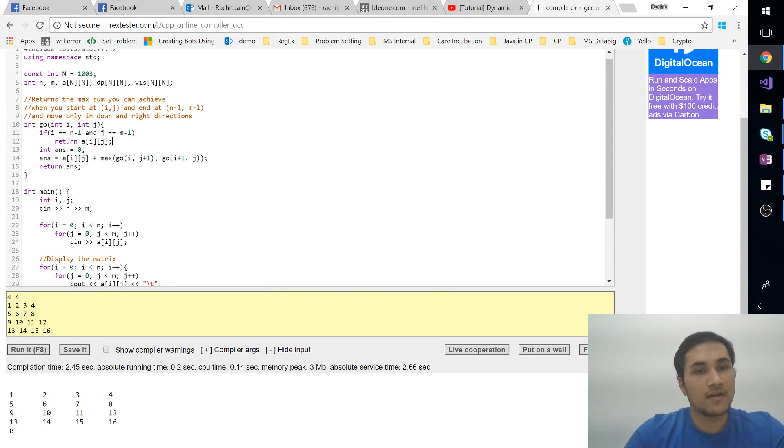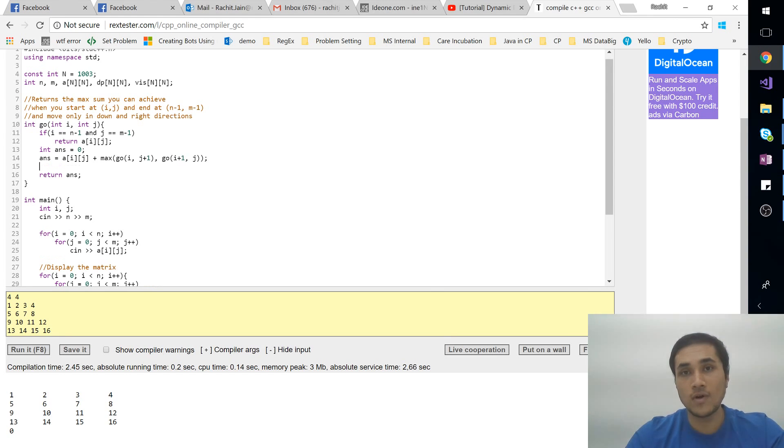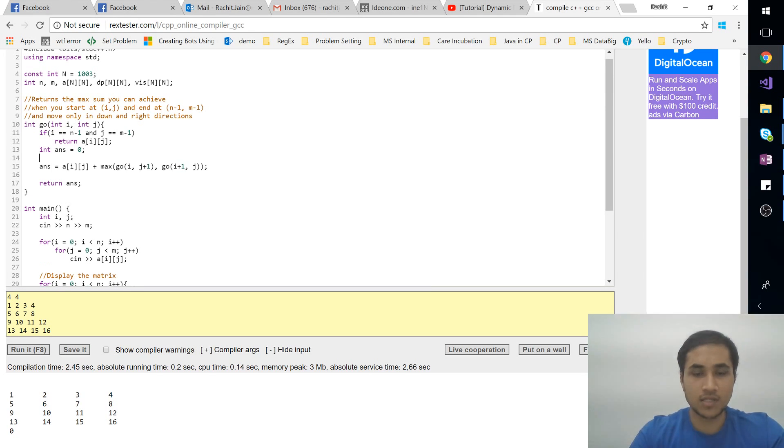Otherwise this is fine, but still, what if you're at the last column? Then you can't... you have only one choice to go down. You can't go to the right. So we'll just see that case also. So this case is only when i is less than n-1 and j is less than n-1. Right, otherwise...